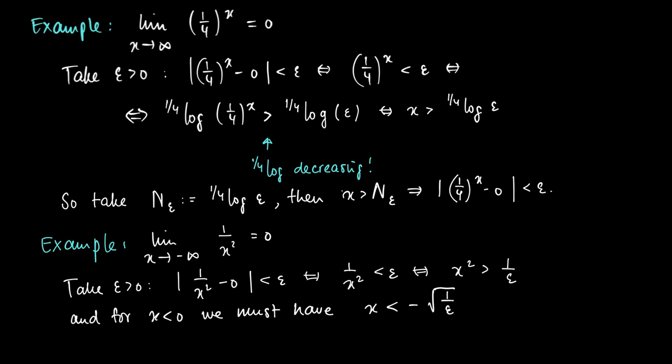So now we may take N_epsilon equal to minus the square root of 1/epsilon. If we take x smaller than N_epsilon, then we follow the equivalent signs above to show that the absolute value of 1/x² minus 0 is smaller than epsilon.